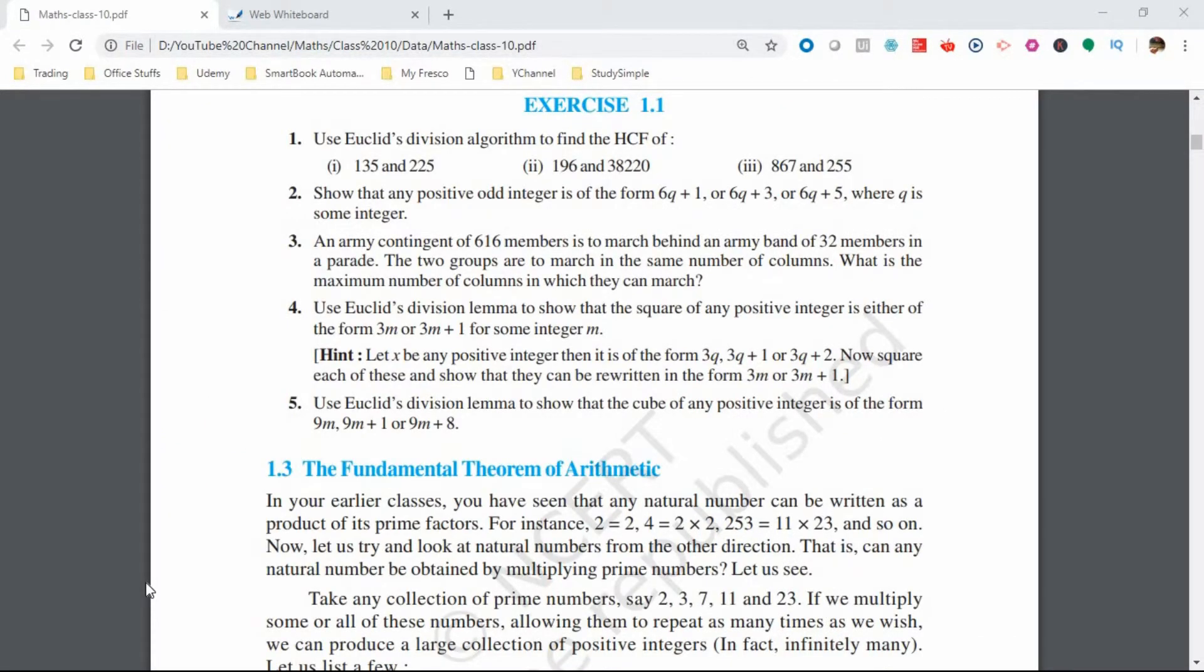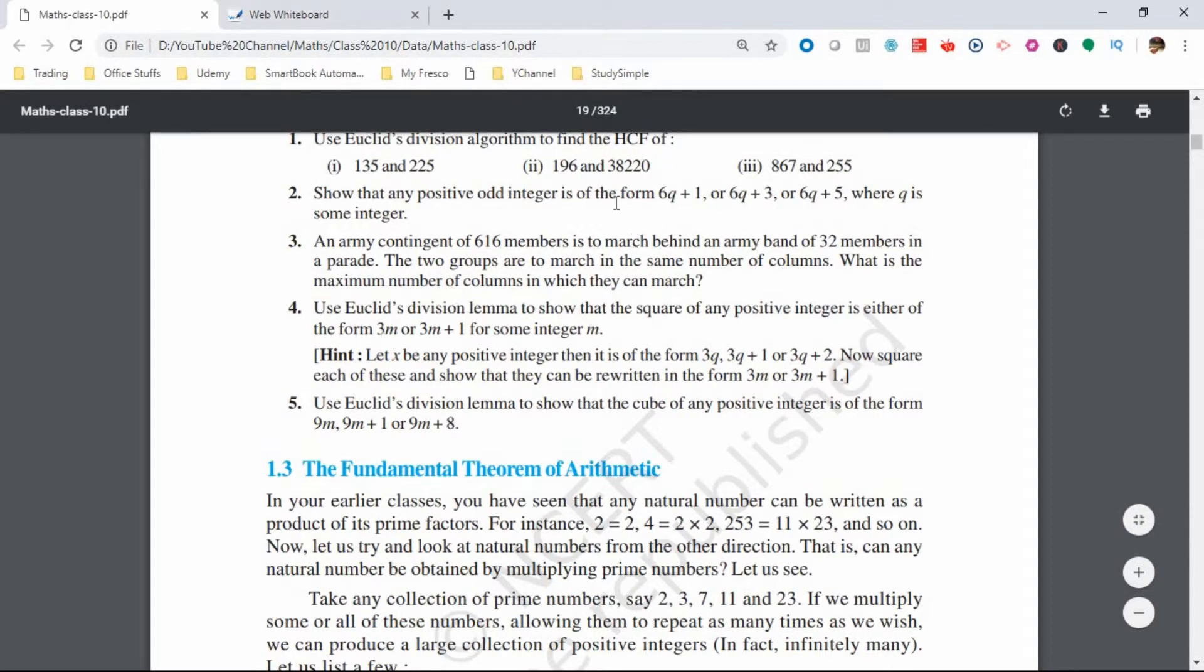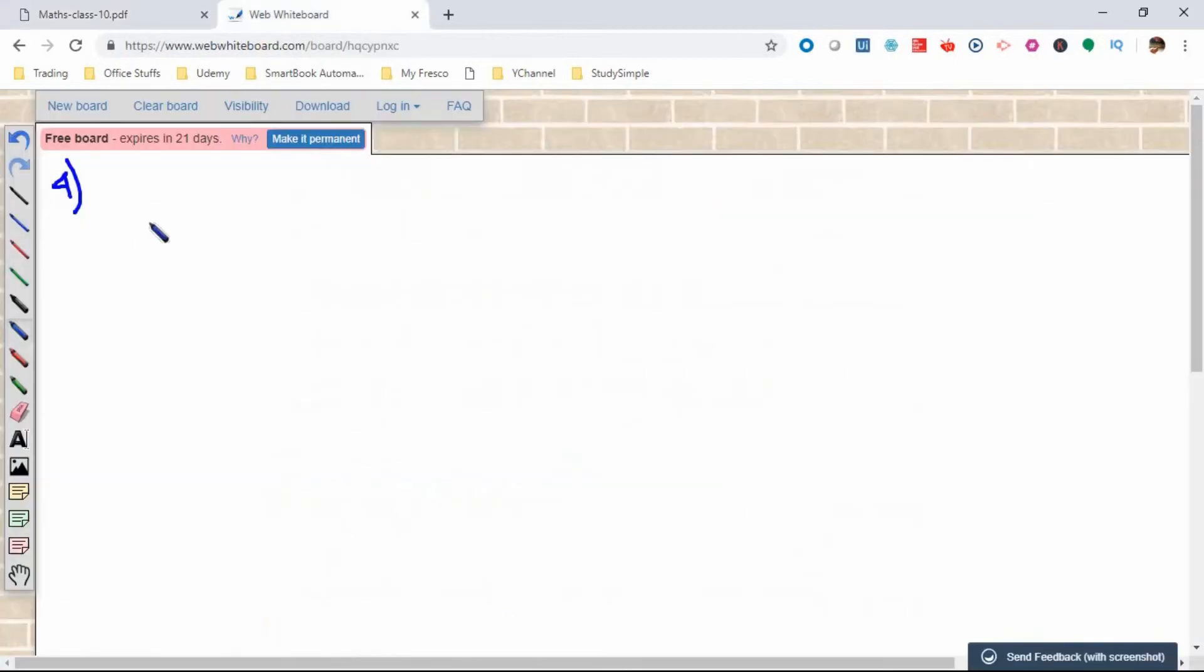Question number 4 says: using Euclid's division lemma, show that the square of any positive integer is either in the form of 3m or 3m+1. There is a hint given which says if x is a positive integer, then it is in the form of 3q, 3q+1, or 3q+2. In question 2, I kept b equals 6 because there was a 6 in the question. Here we will use b equals 3, and a will be our positive integer.